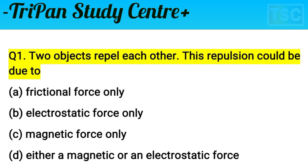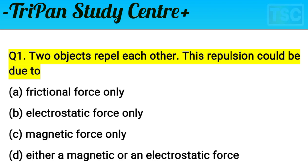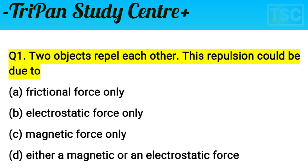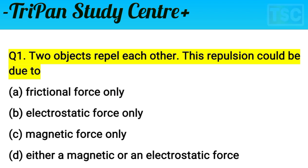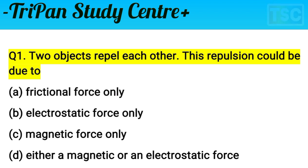First, choose the right answer from the four options and write it in your notebook. The answer is clear: frictional force cannot cause repulsion between objects. Electrostatic force is correct, and magnetic force is also applicable here. Therefore, option D is correct — either magnetic or electrostatic force.